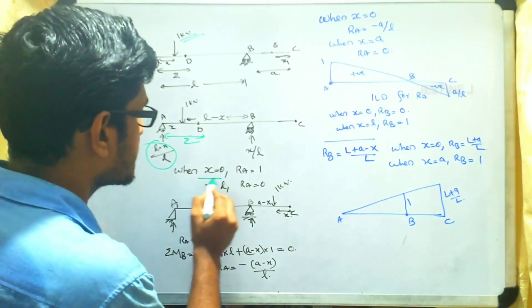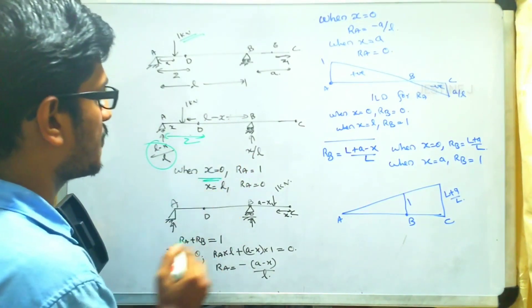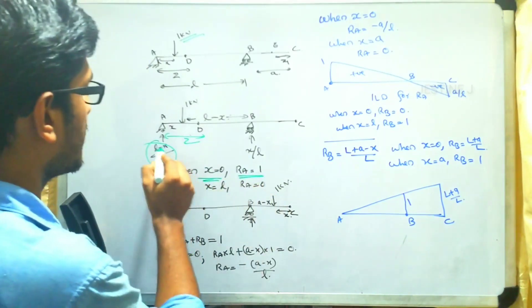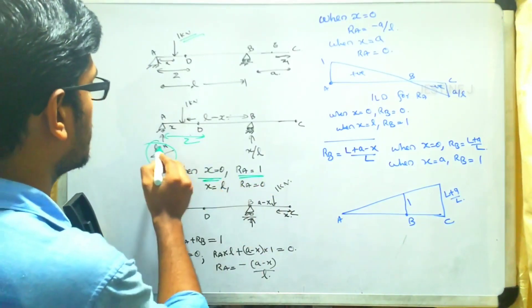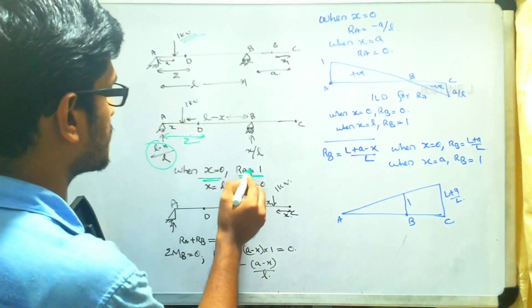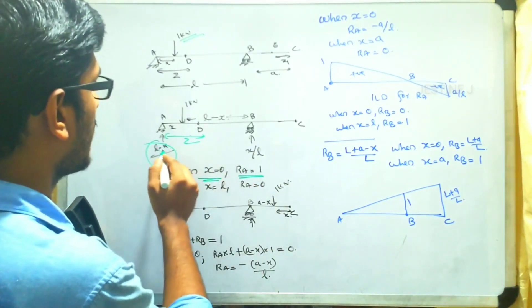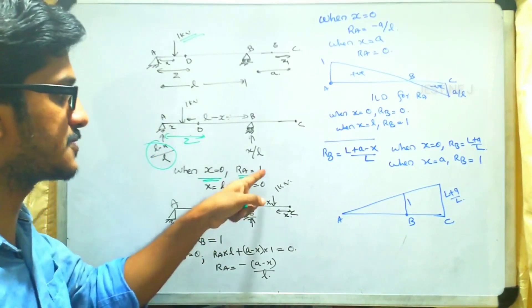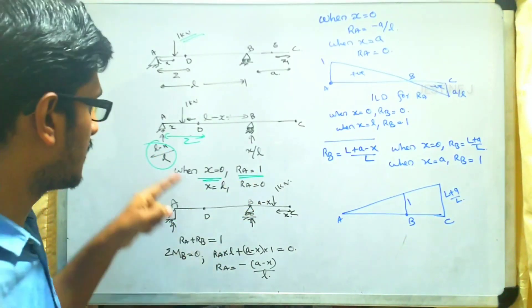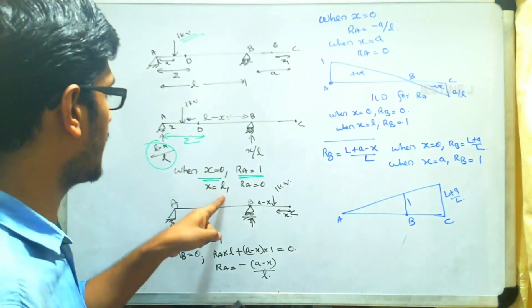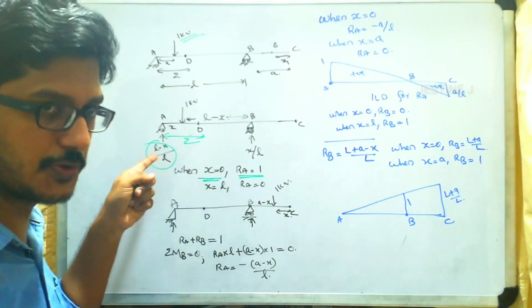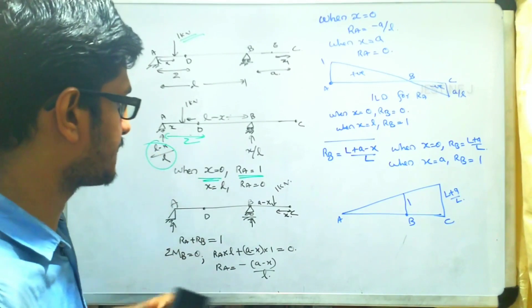When x equals 0, substituting gives RA equals L/L, so RA equals 1. When x equals L, RA equals 0.